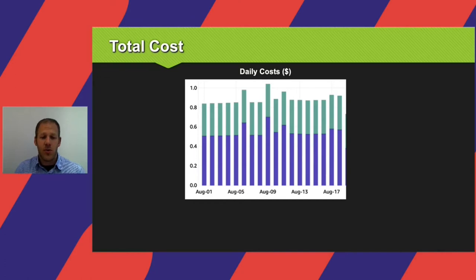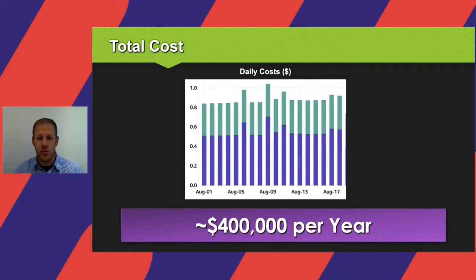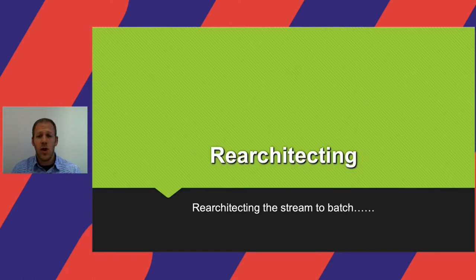Regarding cost — systems and machines cost money. In our case it cost a lot: the amount we needed to pay every year was $400,000. That's a lot. So we thought there had to be a better way, and we had to rethink and re-architect our system.